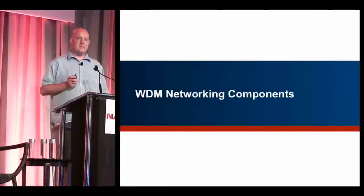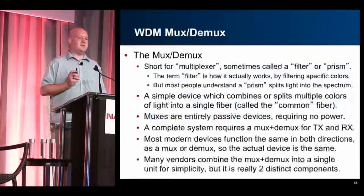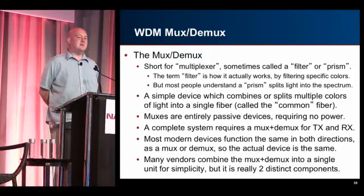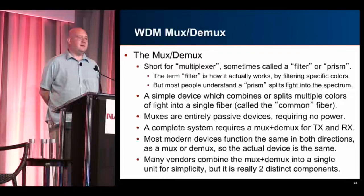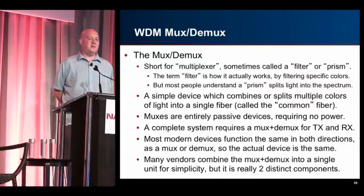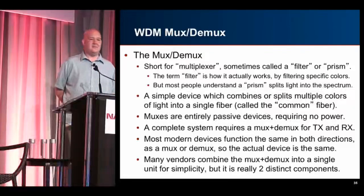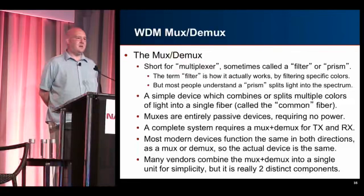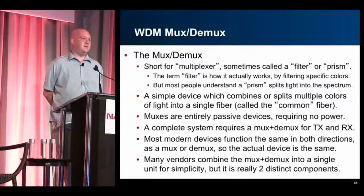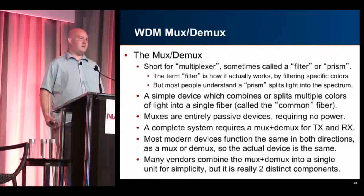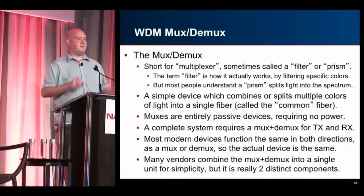Now let's talk about the WDM networking components themselves. Starting with the mux — the multiplexer — you'll also see it called a filter or a prism. 'Filter' is how it actually works, but 'prism' is what people think of when they imagine something splitting light into colors. It's a really simple device: it combines multiple colors of light onto a single fiber. It's completely passive — no power required. You can have a one-unit system doing 40 channels and are really only limited by how many ports fit on a faceplate. You need both a mux and a demux — two sides — and modern gear typically handles both directions.